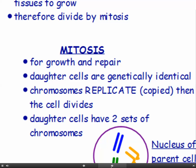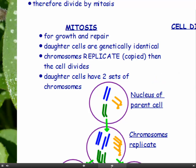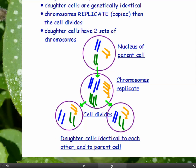Mitosis is used for growth and repair, and the new cells produced are called daughter cells — that's the proper term. In mitosis, the daughter cells are genetically identical. In the process of mitosis, the chromosomes first replicate, which means copy, and then the cell divides, giving daughter cells which have two sets of chromosomes. You can see in the nucleus of the parent cell we have three pairs of chromosomes — in humans it's 23 pairs, but I'll show three for simplicity. The chromosomes replicate to give six pairs, then the cell divides into two, and each daughter cell is identical to each other and to the parent cell with an identical number of chromosomes.